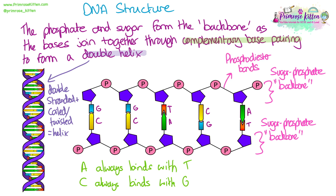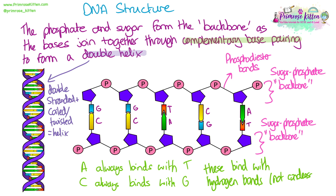Phosphodiester bonds form between the sugars and the phosphates to form that sugar-phosphate backbone, again through condensation reactions. The bases bind together with hydrogen bonds — this is one of the only bonds in DNA not formed from a condensation reaction. So no hydrolysis is needed to split these bonds apart; it's just hydrogen bonding which attracts the bases to each other.